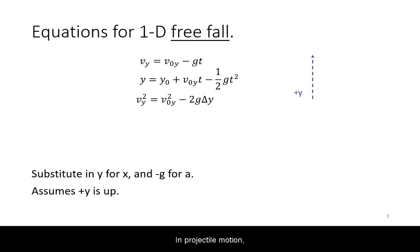In projectile motion, the object is in free fall. This means that its vertical acceleration is downward and has a constant value of 9.8 meters per second squared.